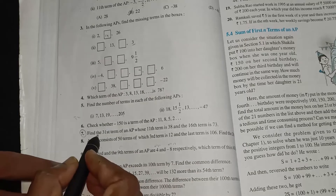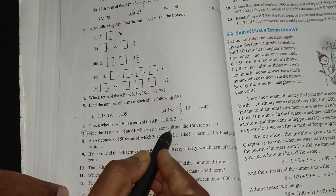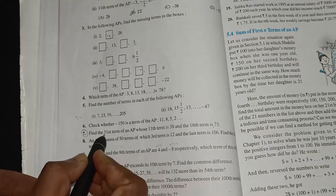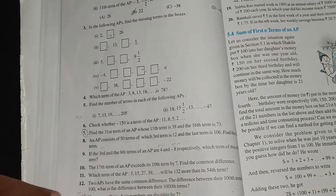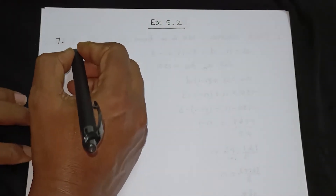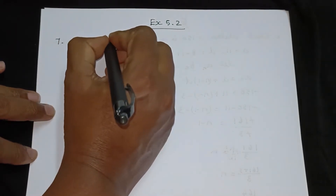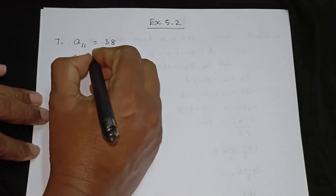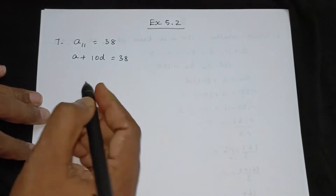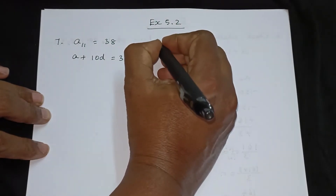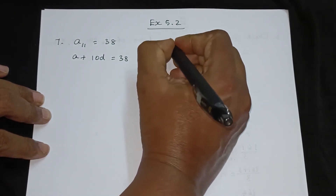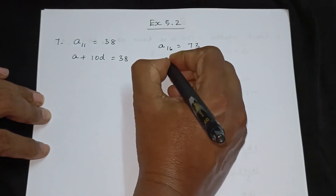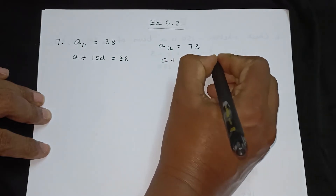Now we need to find the 31st term. We have the 11th term and the 16th term. The 11th term: a plus 10d is equal to 38. Next, we have the 16th term — A16 is equal to 73 — so a plus 15d is equal to 73.